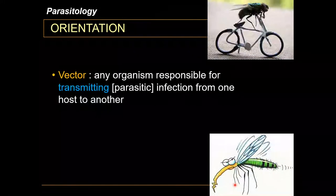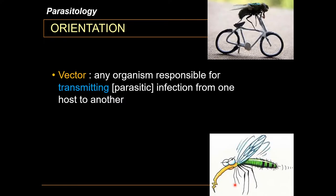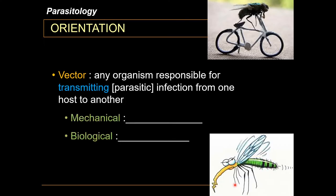Vectors are organisms responsible for transmitting parasitic infection from one host to another. Vectors are divided into mechanical vectors versus biological vectors. Mechanical vectors are parasite vectors where no development or changes in the life cycle stage occurs during transit.